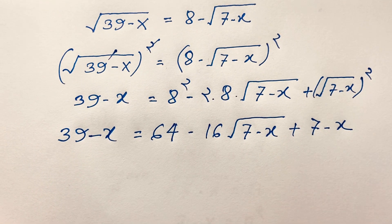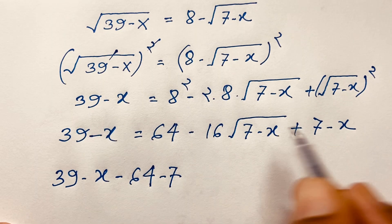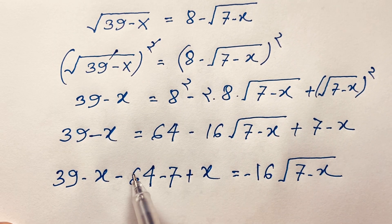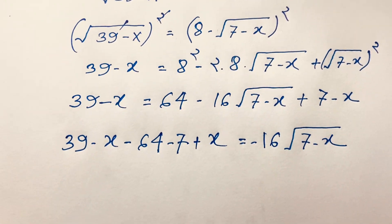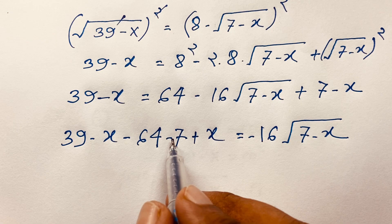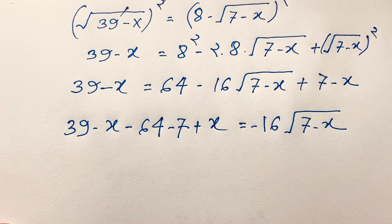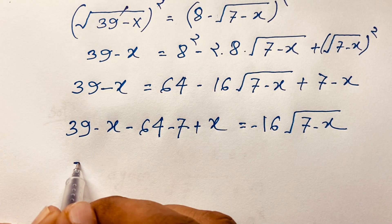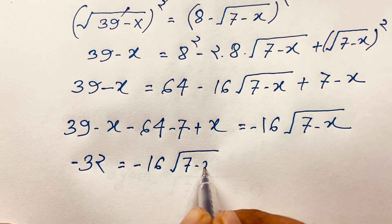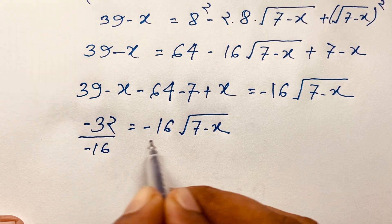Expanding gives 39 minus x equals 64 minus 16 times square root of (7 minus x) plus (7 minus x). Simplifying, the x terms cancel out and we get 39 minus 64 minus 7, which is negative 32, on one side, and negative 16 times square root of (7 minus x) on the other. Dividing both sides by negative 16 gives 2 equals square root of (7 minus x).